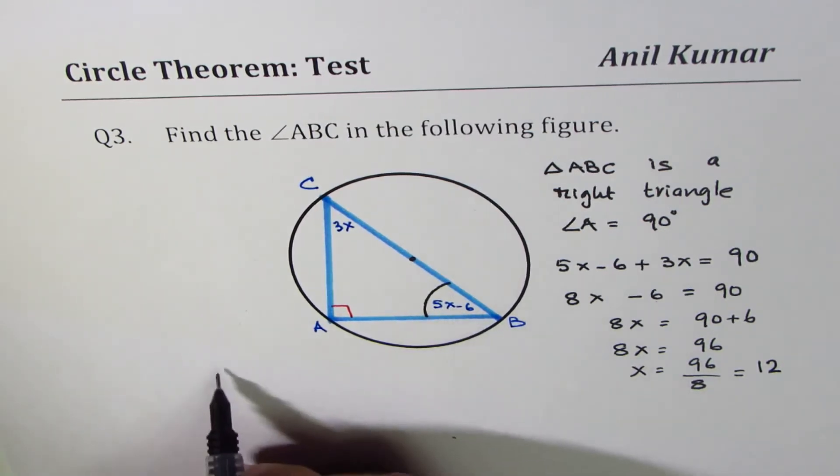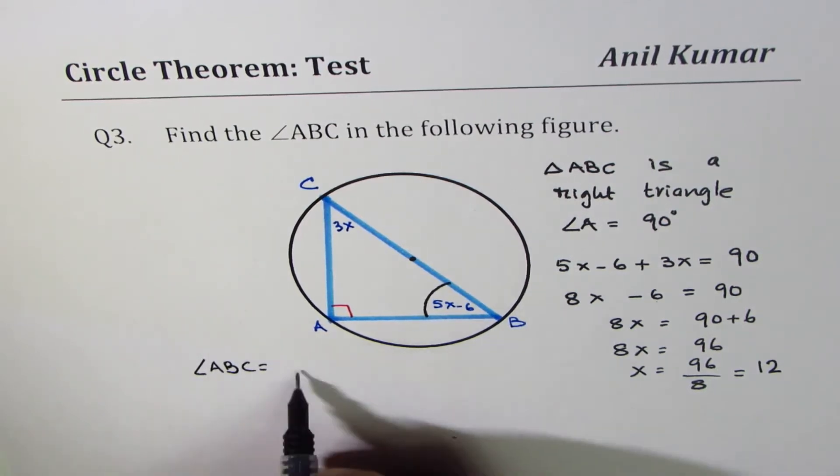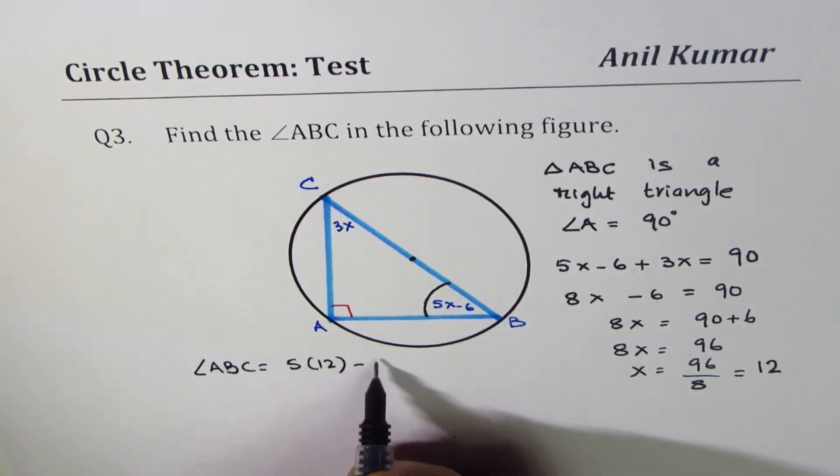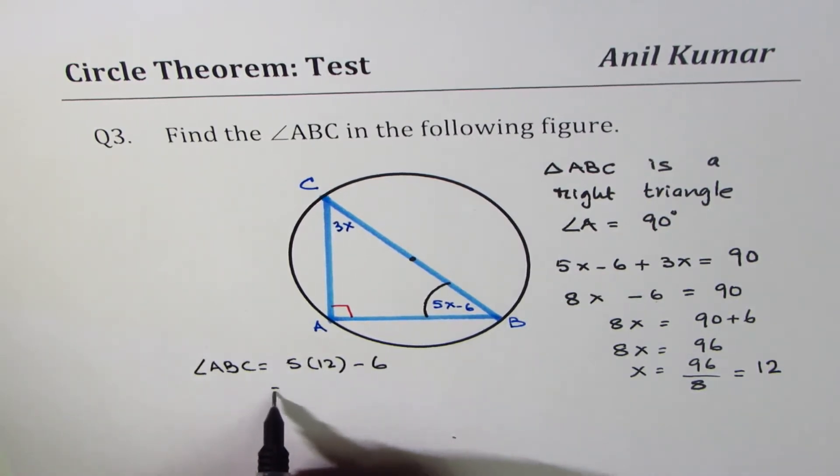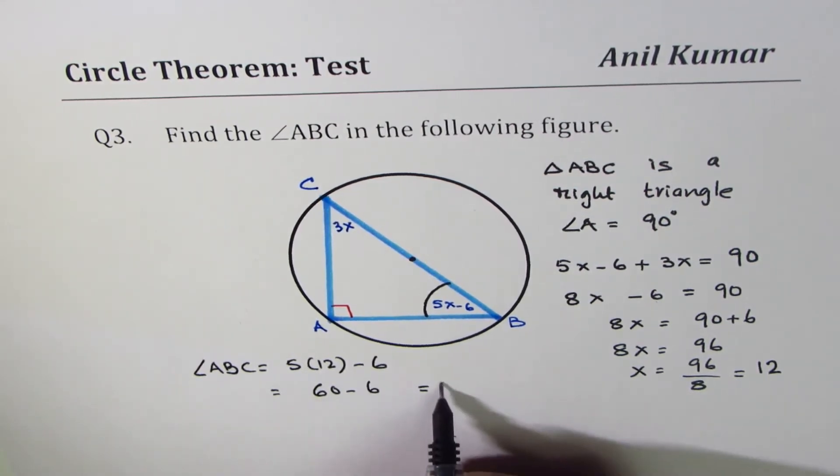Since x is 12, we can say angle ABC is equal to 5 times 12 minus 6. 5 times 12 is 60 minus 6, which is 54 degrees. So the angle B is 54 degrees.